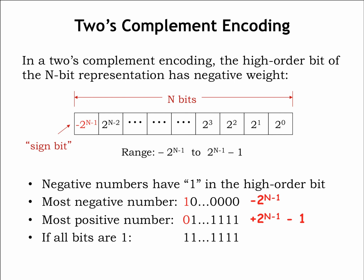If all n bits are 1, think of that as the sum of the most negative number with the most positive number. In other words, minus 2 to the n minus 1 plus 2 to the n minus 1 minus 1, which equals minus 1. And, of course, if all n bits are 0, that's the unique representation of 0.